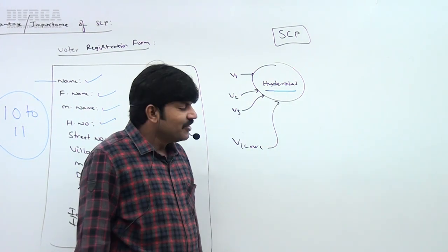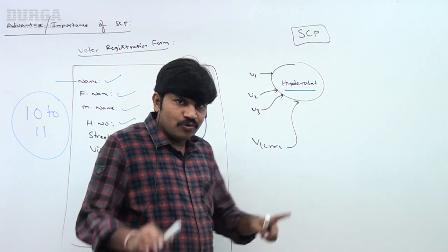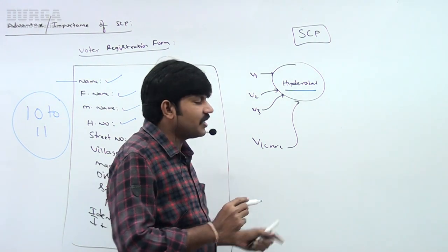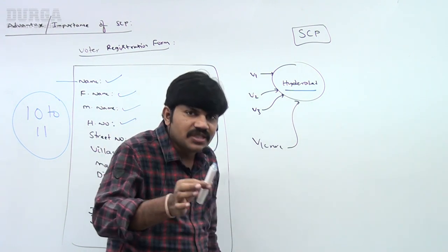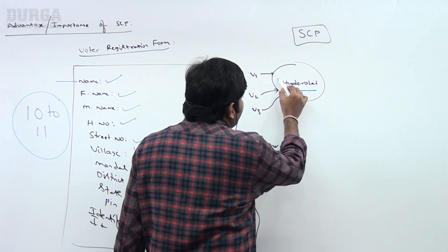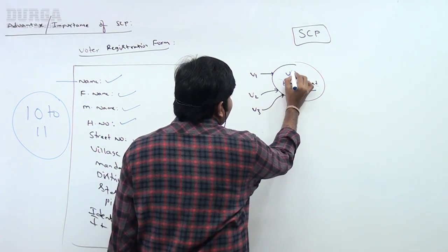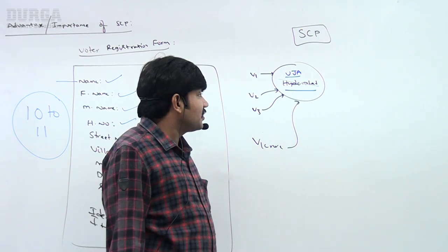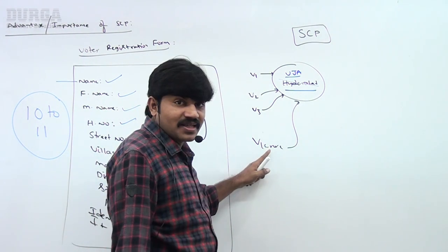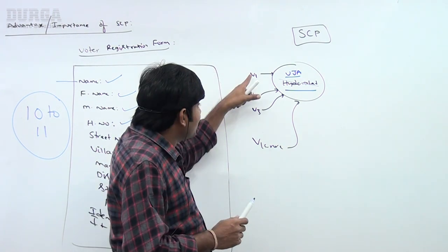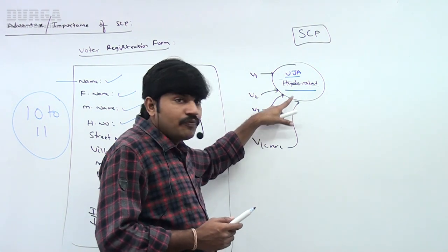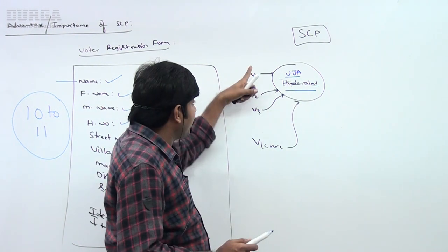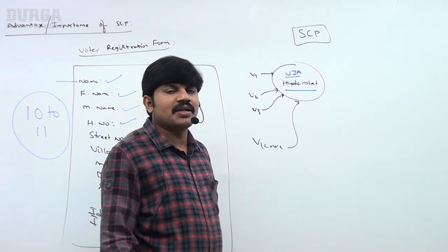Voter 3 wants to change his city name to Vijayawada. Now observe — if this voter opened his online application or database and tried to edit his account information, setting the city name to Vijayawada — if he is allowed to change the content to Vijayawada, then how many references are going to be affected? All 1 crore references will be affected, because if multiple references point to the same object, then by using one reference if we try to perform any change, that change will be reflected for all.